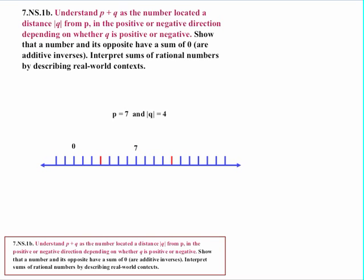Now let's try a different starting point other than 0. Let's say p is 7 — that's our starting point — and the absolute value of q is 4, so we're going to travel a distance of 4 from 7. If we travel 4 in the positive direction, we start at 7 and go right, which puts us at 11. If we travel 4 from 7 but in the opposite direction, we go left, which puts us at 3.